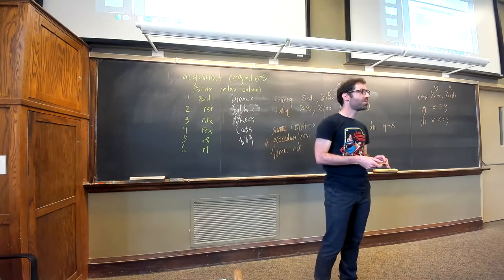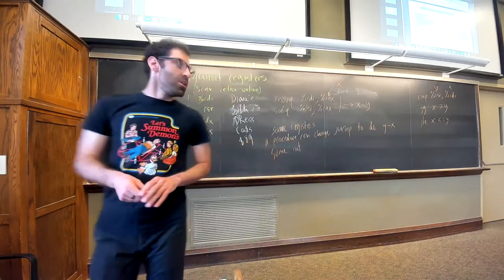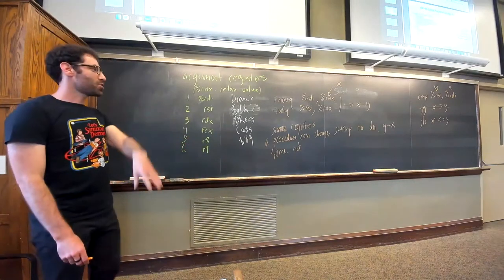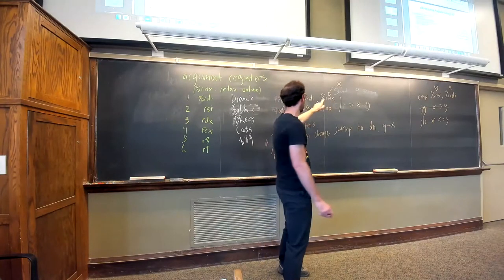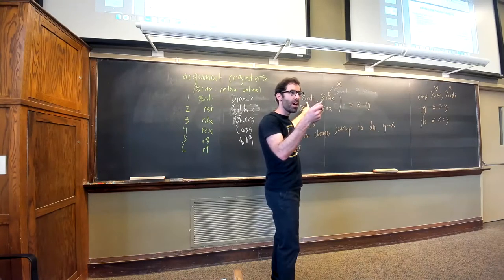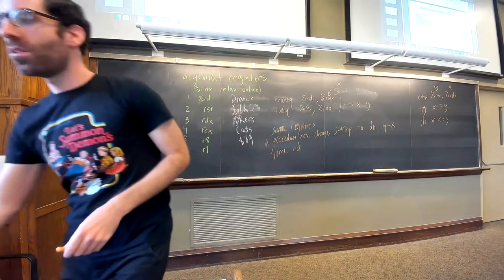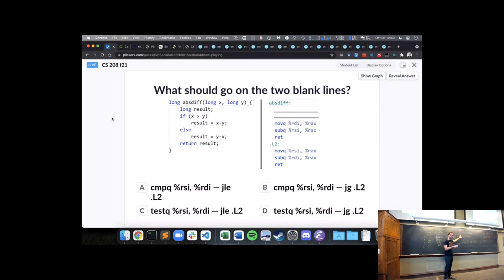So to finish answering the original question — how did I know that RDI was going to be X? It's that I know RDI always holds the first argument to a function. I know that my first argument to absolute diff is X, so I know RDI has X, and when I move that into RAX, X goes there. RSI has Y because RSI always holds the second argument.